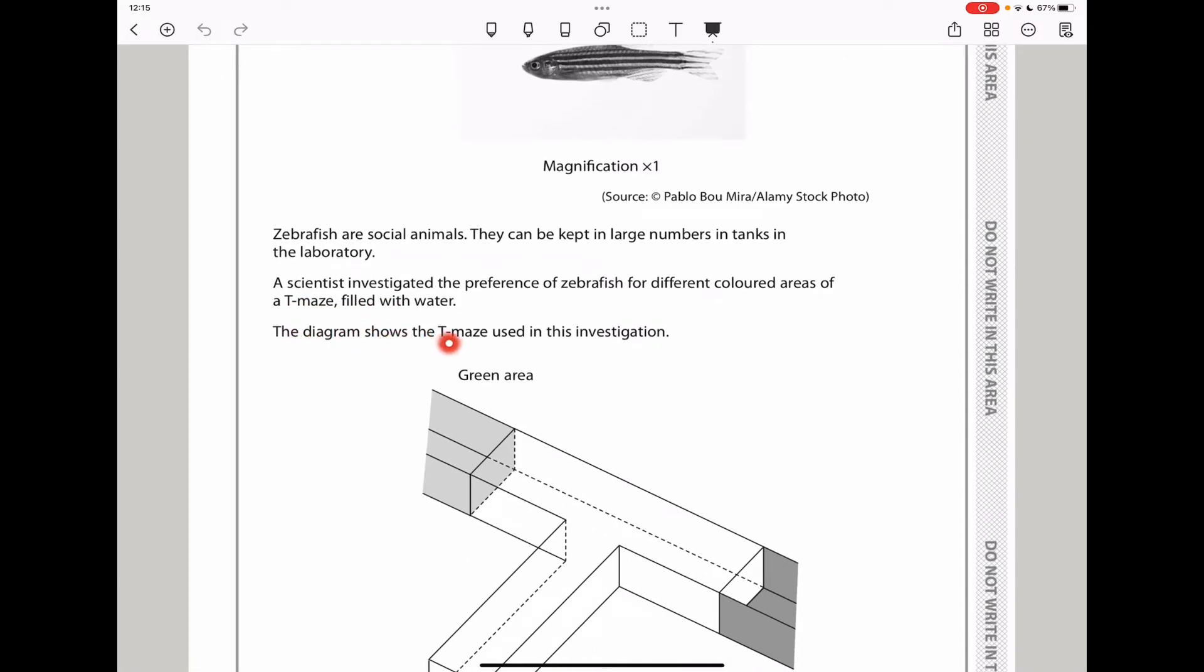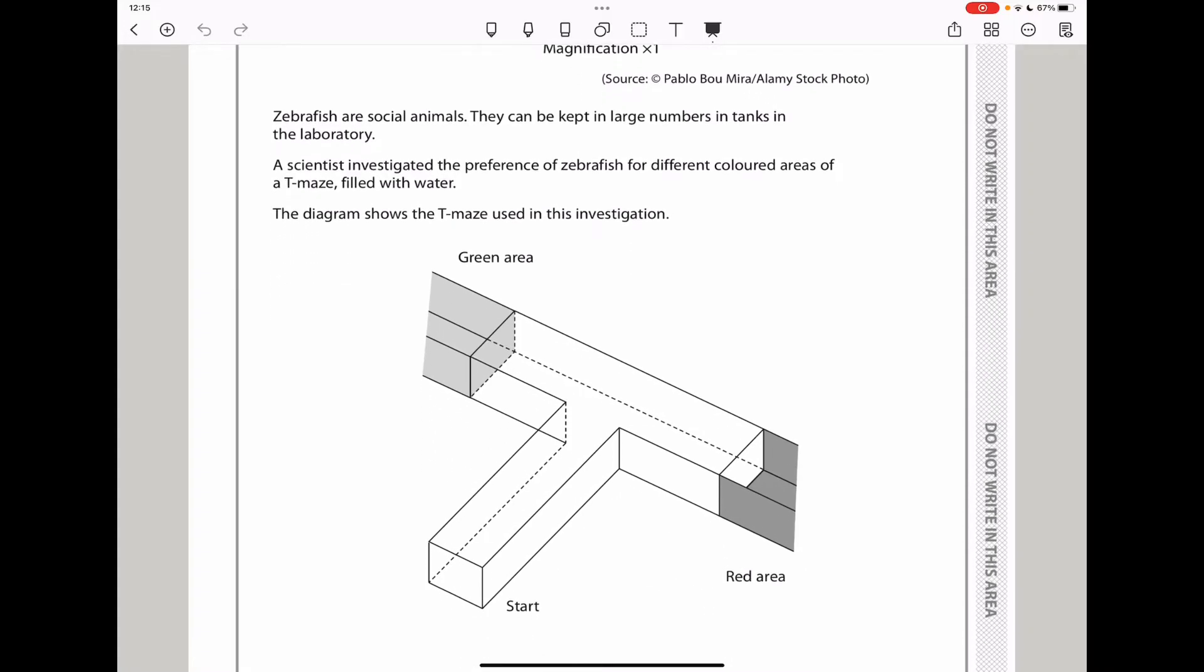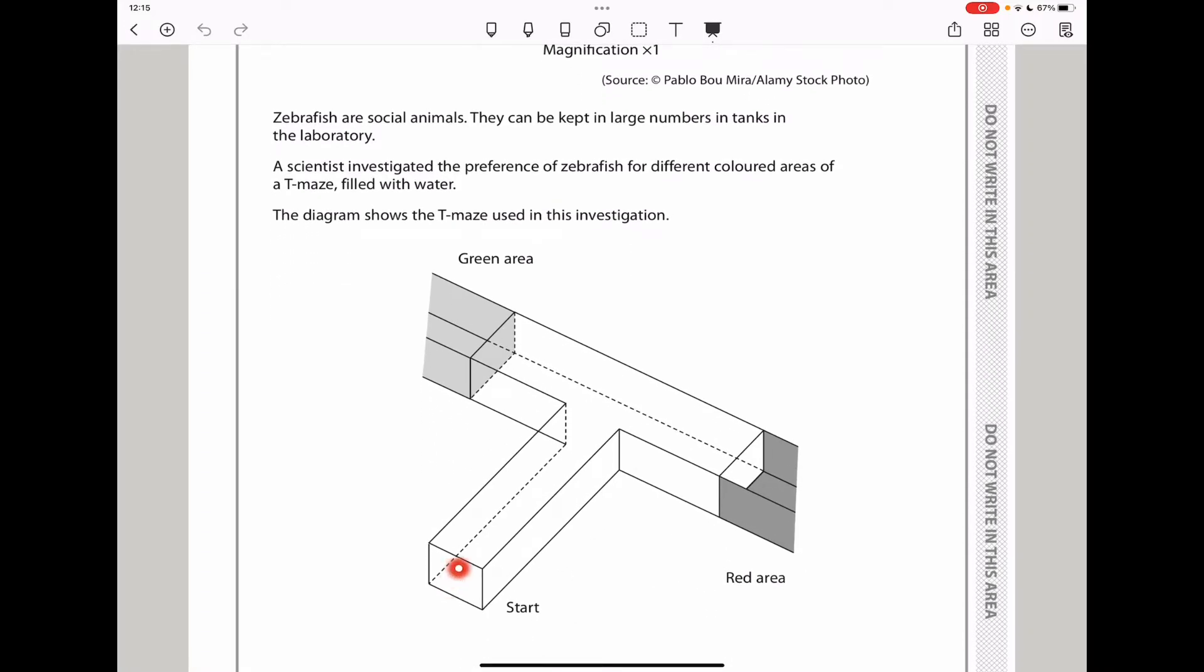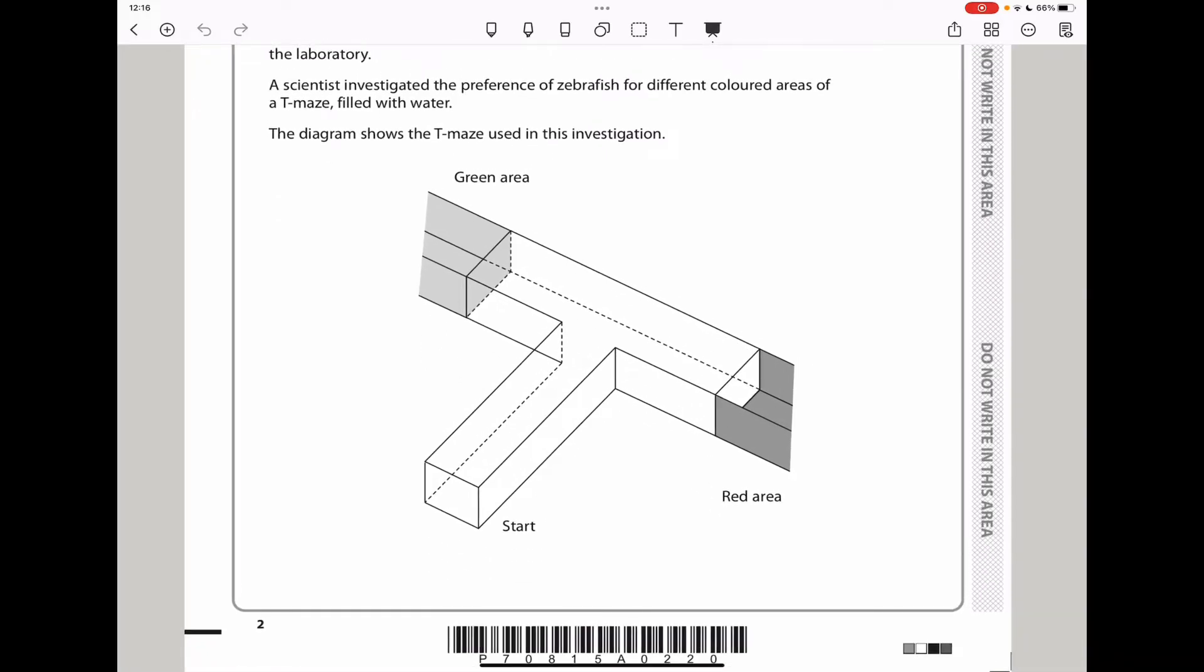The diagram shows the T-maze used in the investigation. They will start here, and then there is a T-maze. They can choose to go the other side or this side - the red area or the green area. If we have maybe 50 zebrafish at the beginning, we can assume there will be 25 here and 25 here, if you're thinking they're going to choose halfway. Half go one side and half go the other if there is nothing they prefer.